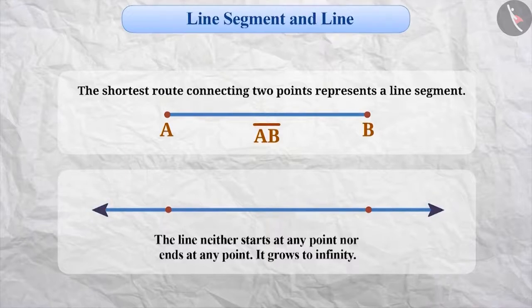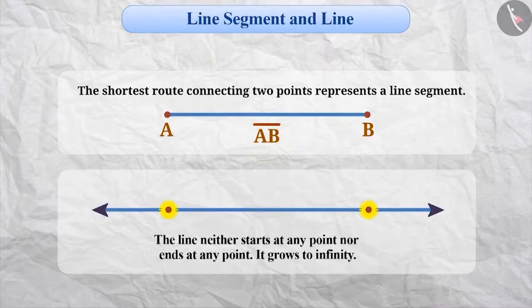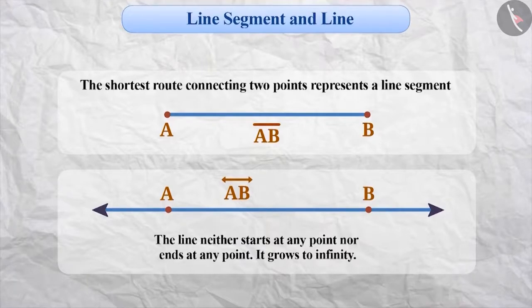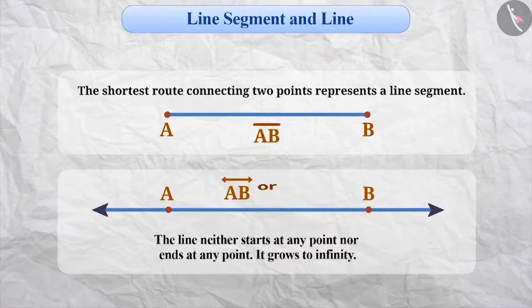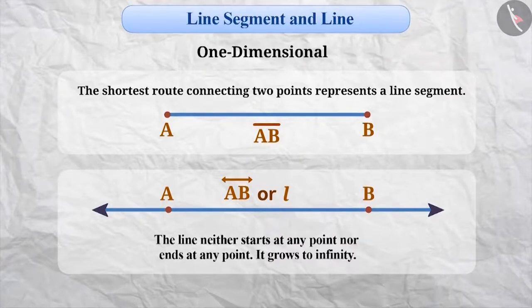Can you tell what we can name this line? We name it by any two points situated on the line. For instance, here we will name it as line AB. A line can also be named using small letters in English — for instance, line L. Remember, a line is a one-dimensional shape.